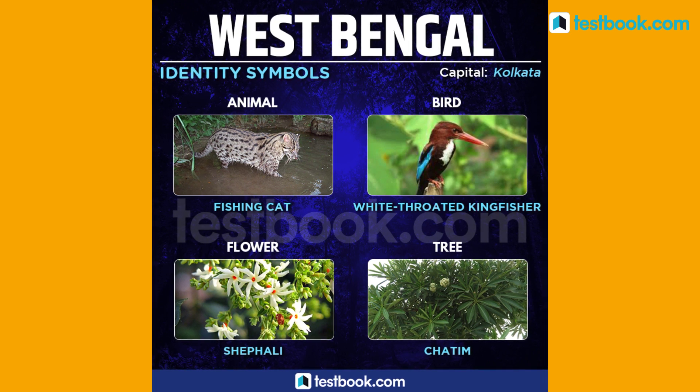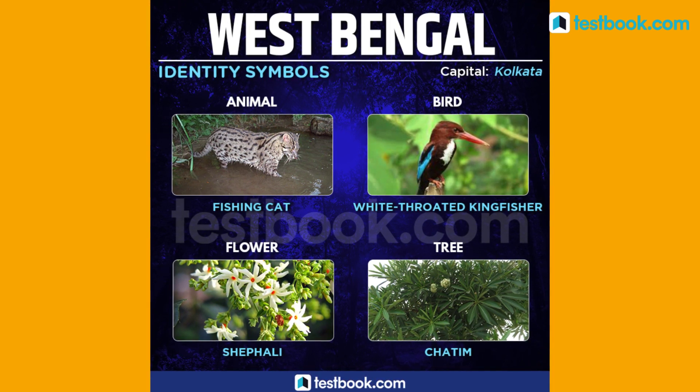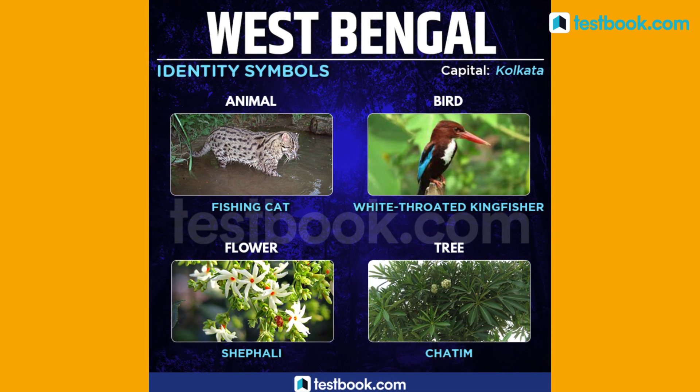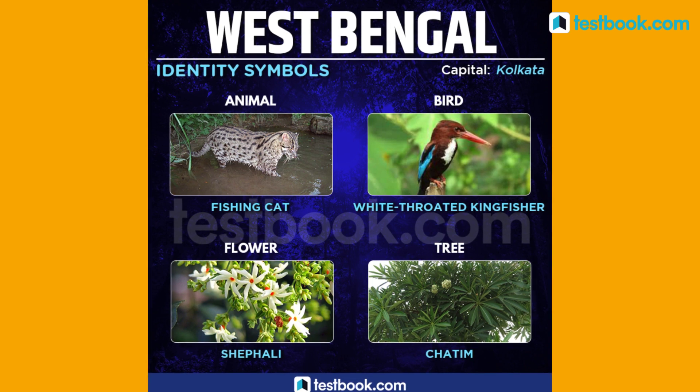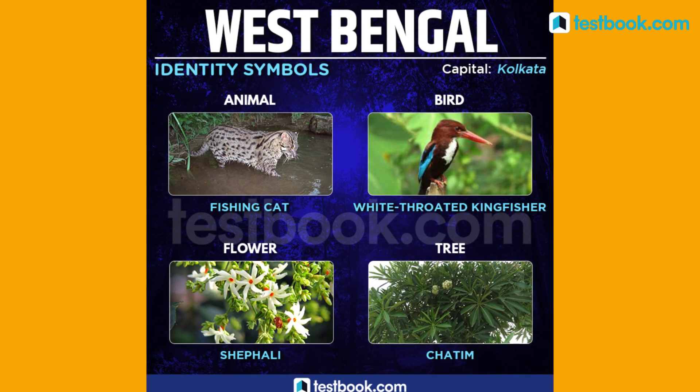The state animal for West Bengal is Fishing Cat, state bird is White-Throated Kingfisher, state flower is Shefali and state tree is Chhatim.